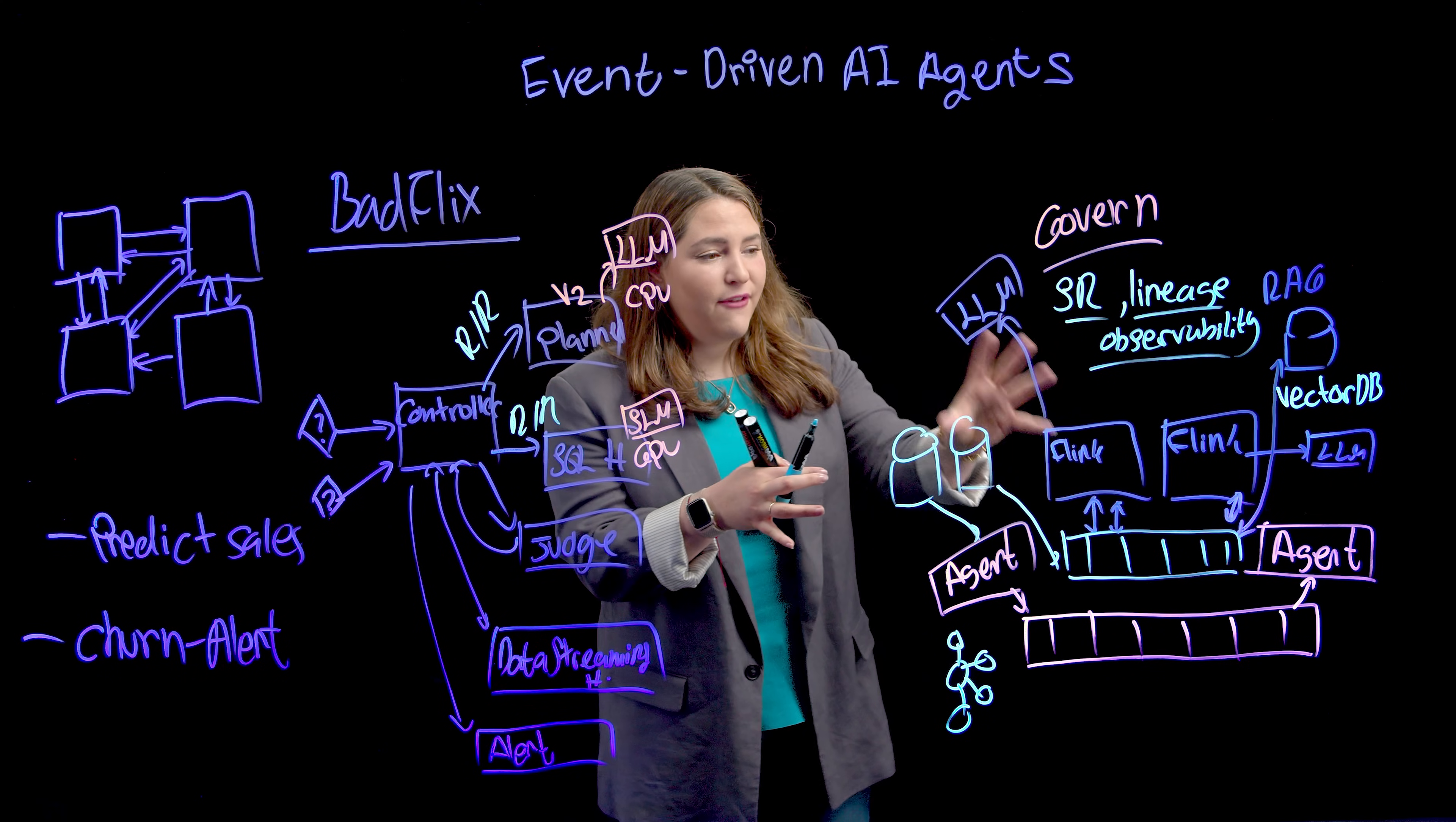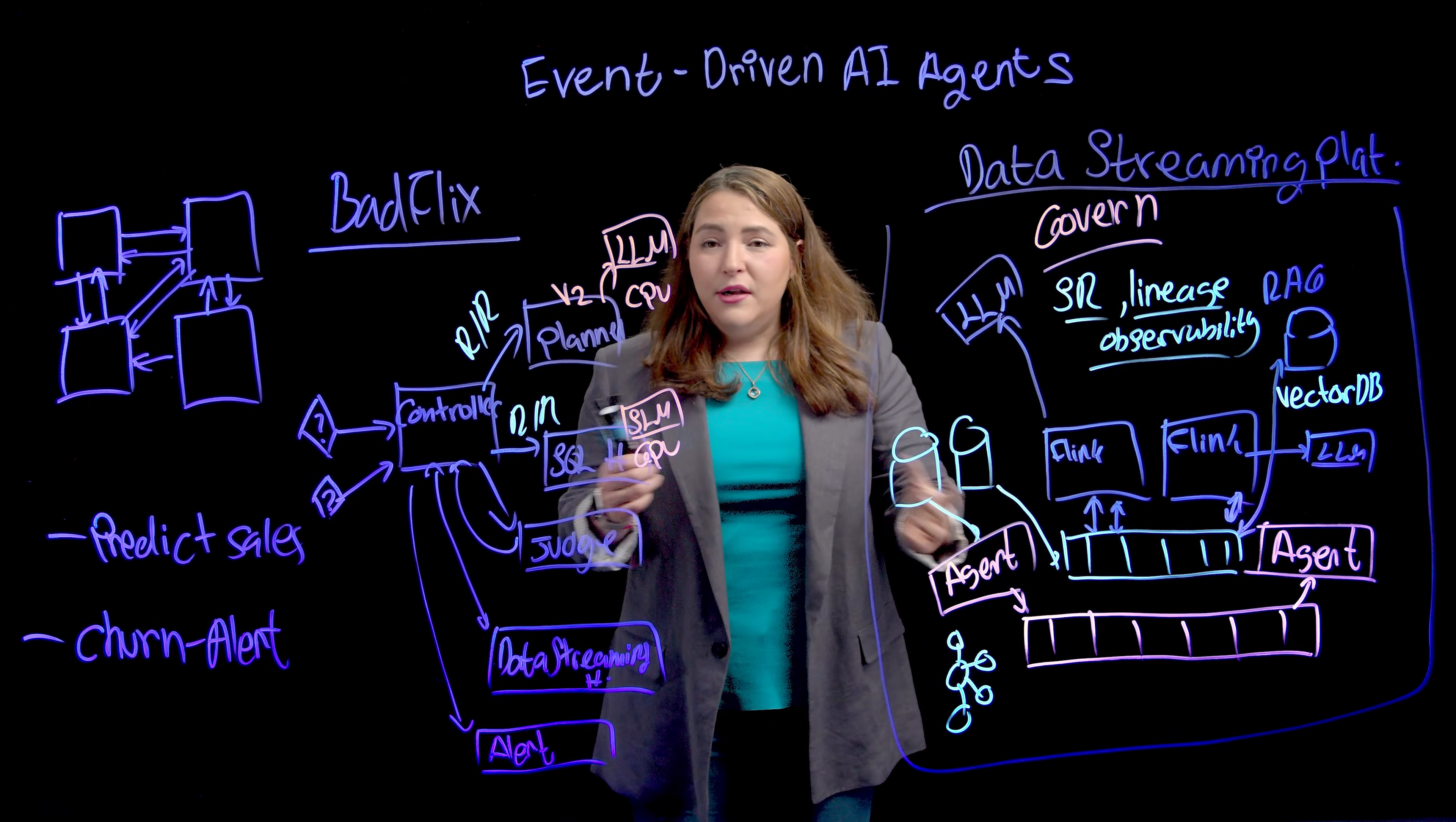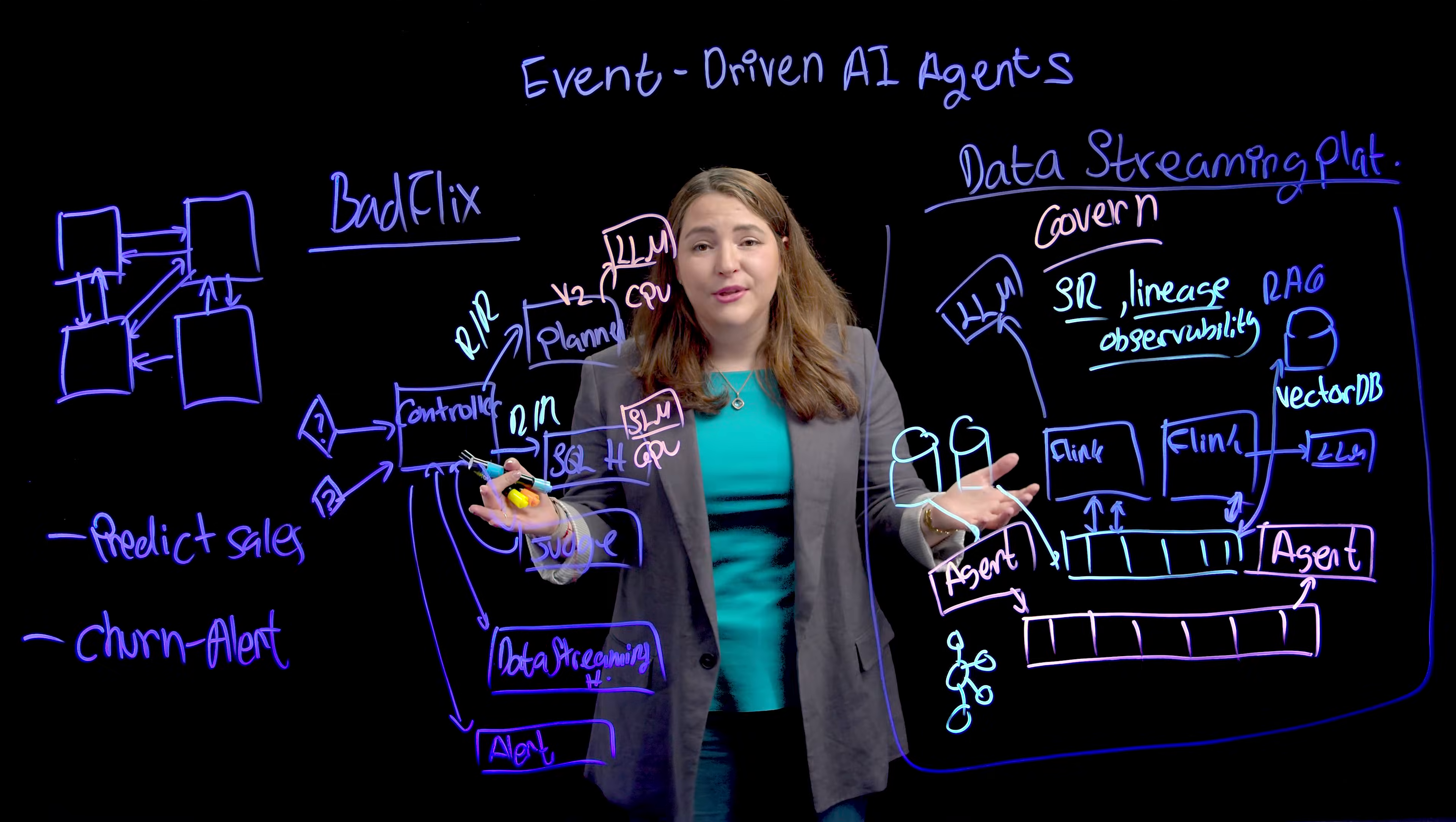So what do we need to be successful with building AI agents? We actually need a data streaming platform. Call them agents, call them microservices. If they don't speak with events, they're just fancy applications with LLM brains waiting to become obsolete.